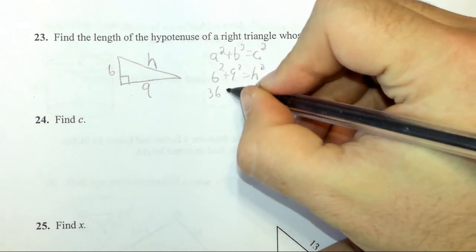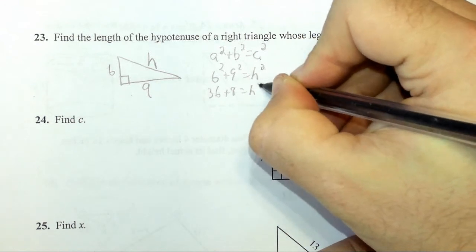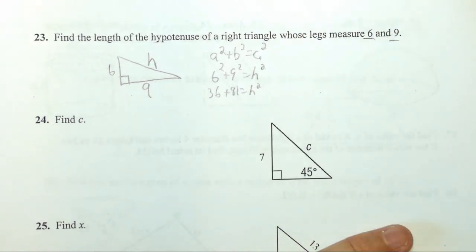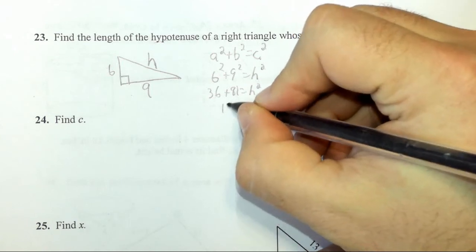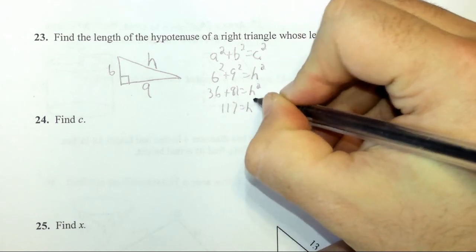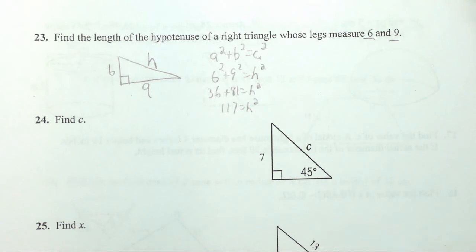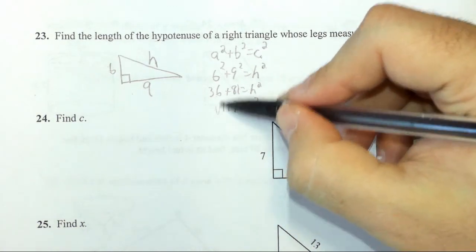That gives me 36 plus 81 is equal to H squared. Then 36 plus 81 is 117 equals H squared. And then we'll take the square root of both sides.